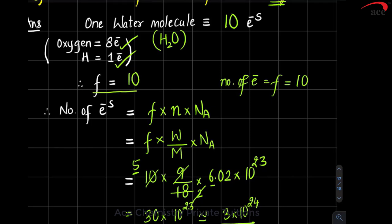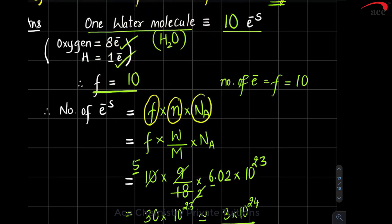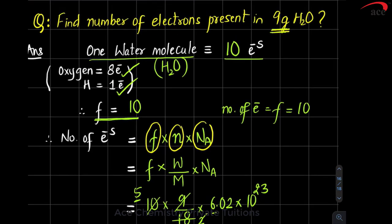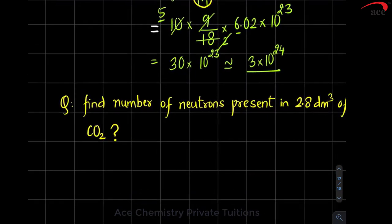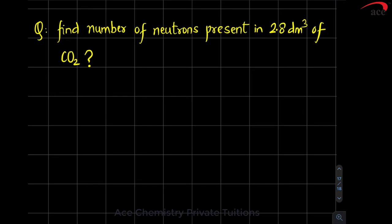To summarize the method: in all numericals asking for electrons, protons, or neutrons — first find the factor, which is the number of the required particle per molecule. Then use the formula: factor × number of moles × Avogadro number. If data gives mass, convert to moles using mass / molar mass. Pause and try the next question on your own.